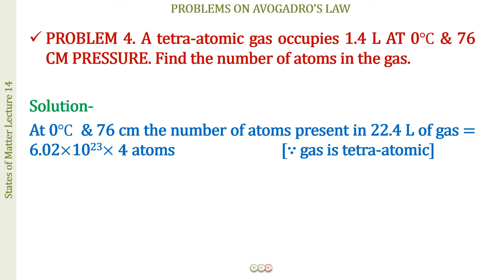At STP, 1 mole occupies 22.4 liters. When we have 22.4 liters of a gas, the number of molecules equals 6.02 × 10²³. Since it is a tetraatomic gas, multiply that by 4 to get the number of atoms.